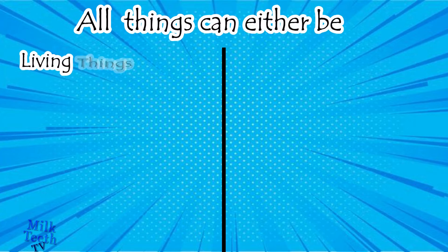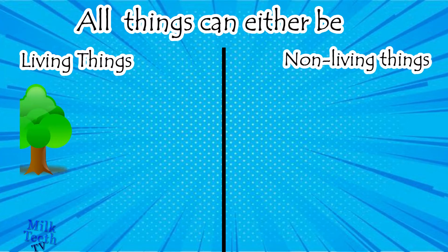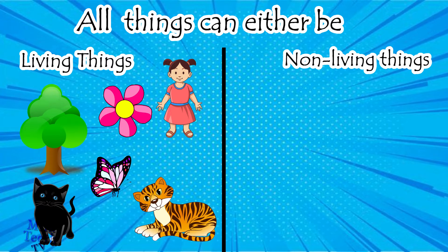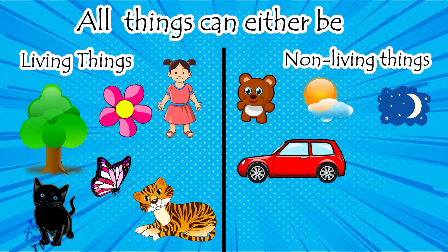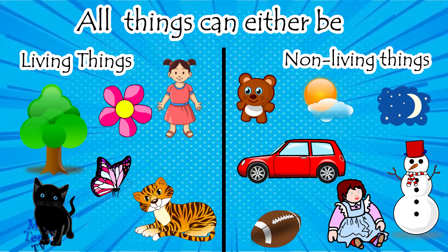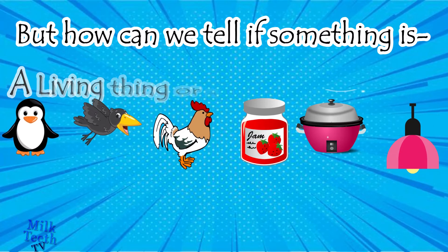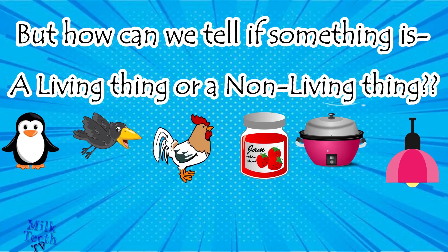All the things around us can either be living things or non-living things. A tree, a flower, a girl, a cat, a tiger, a butterfly — all are living things. A teddy bear, Sun, moon, a car, a ball, a snowman, and a doll are all non-living things. But how can we tell if something is living or non-living?